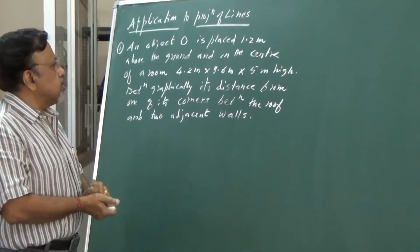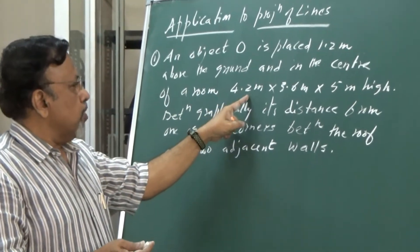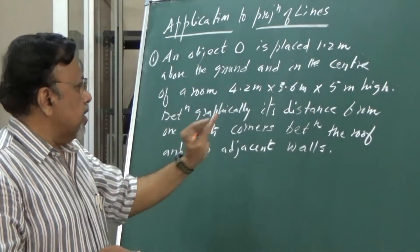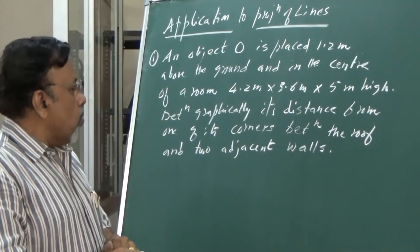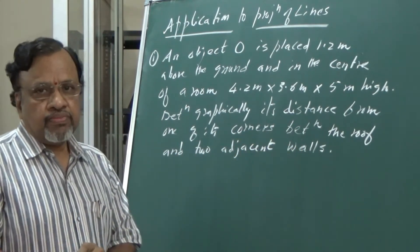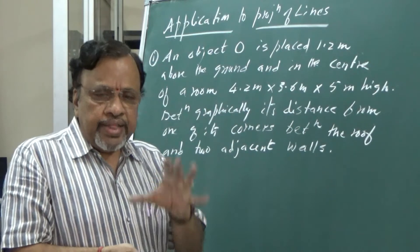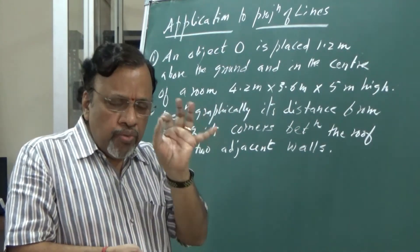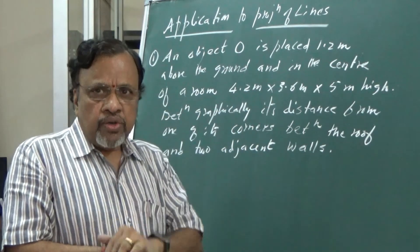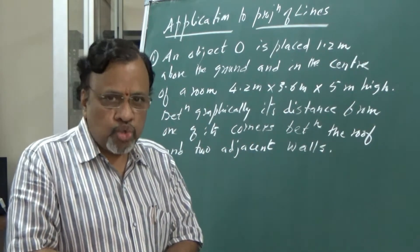An object O is placed 1.2 meters above the ground and in the center of a room 4.2 meters by 3.6 meters, 5 meters high. Determine graphically its distance from one of its corners between the roof and the two adjacent walls. So what I need to do is draw the orthographic projection of a room, locate the object inside, and then determine its distance from one of the roof corners.